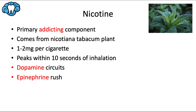Nicotine is the primary addicting component of tobacco products, and it comes from the Nicotiana tobacco plant, pictured here. This is the main commercial tobacco plant, and nicotine is contained within the leaves, which are harvested for making tobacco products. There's about 1 to 2 milligrams of nicotine per cigarette, and it rapidly distributes to the brain, with drug levels peaking within about 10 seconds of inhalation. You feel the effects almost immediately, and then they dissipate quickly afterward, compelling you to want to keep smoking to maintain the pleasure.